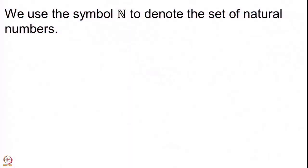But capital N is also used for many other things, so we devise a new notation. This is the symbol we use to denote the set of natural numbers — a slightly decorated N, where the slanted line comes with some small width and there is a gap between the two slanted lines. This is what we will always use to denote the set of natural numbers.